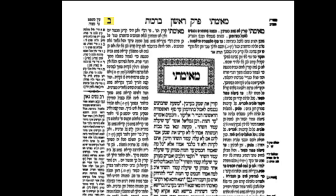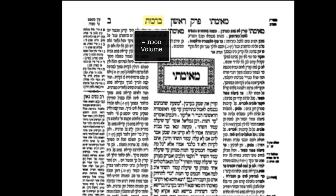Moving a little to the right, I'm now highlighting the word Brachot. Brachot tells you the name of the Mesechet you are in — the name of the whole volume, if you will. The English word for Mesechet is 'Tractate,' though why anyone would use that word I'm not sure. Let's just use the Hebrew word — Mesechet Brachot is the name of the entire volume.